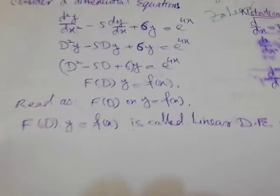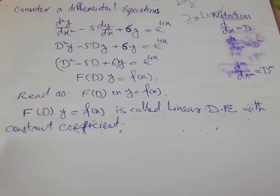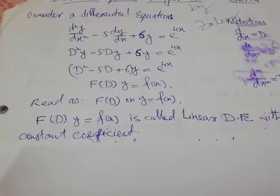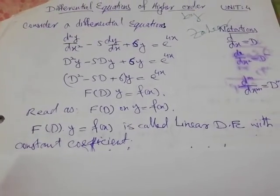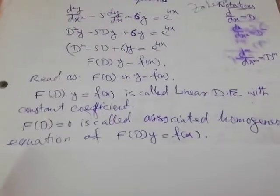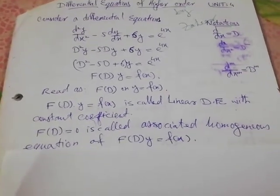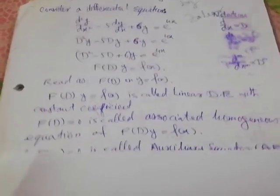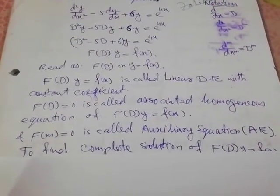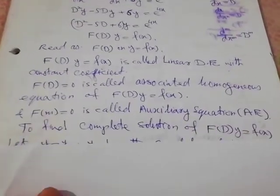f(D) on y equal to f(x) is called a linear differential equation with constant coefficients. Setting f(D) equal to zero gives the associated homogeneous equation, and f(m) equal to zero is called the auxiliary equation.